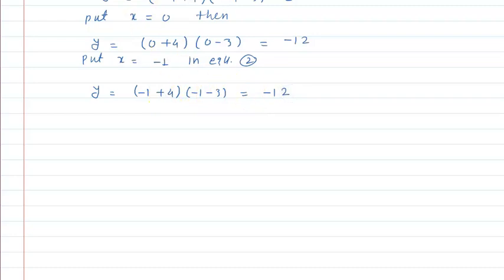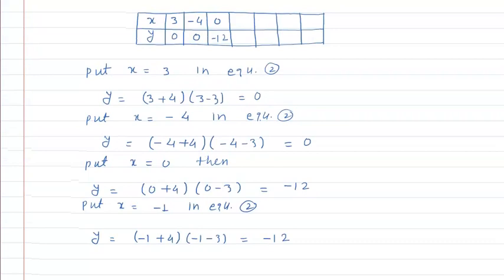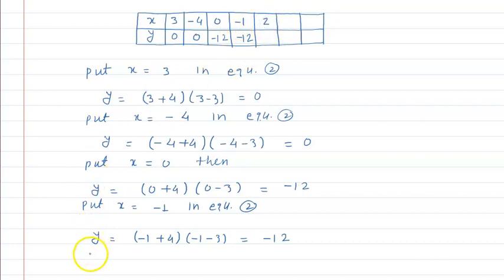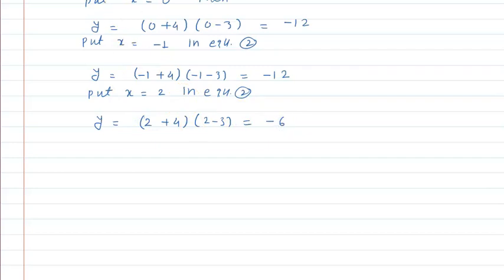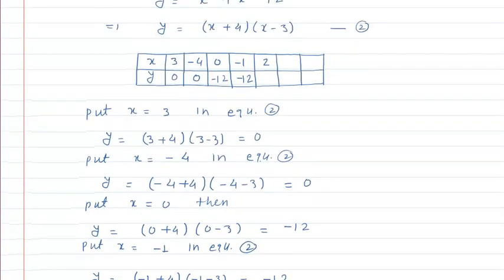So when x = minus 1, y = minus 12 again — same as when x = 0. Ab x ki value 2 decide karte hain. Put x is equal to 2 in equation 2: y is equal to (2 + 4)(2 - 3) is equal to minus 6. So when x = 2, y = minus 6.